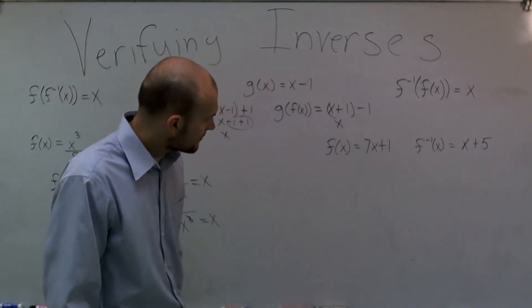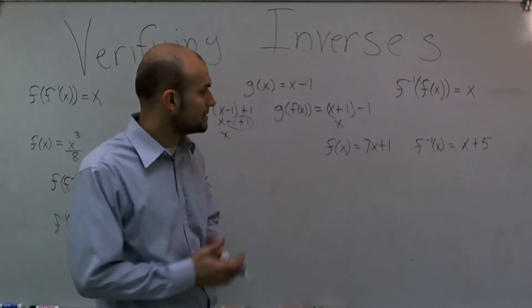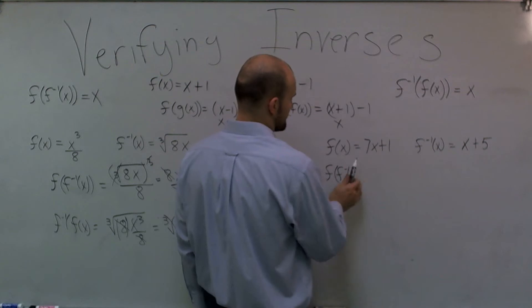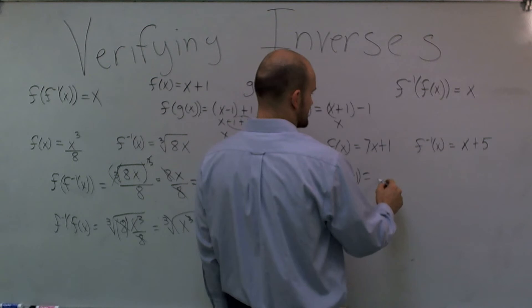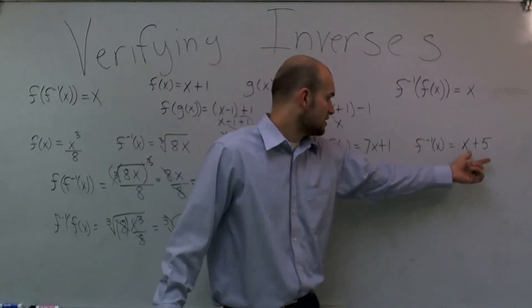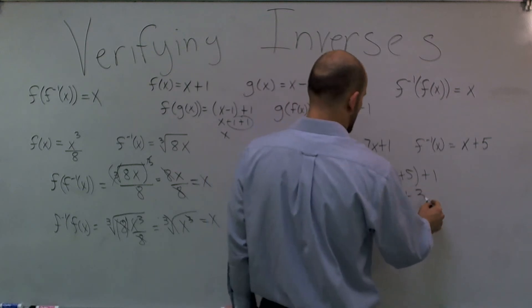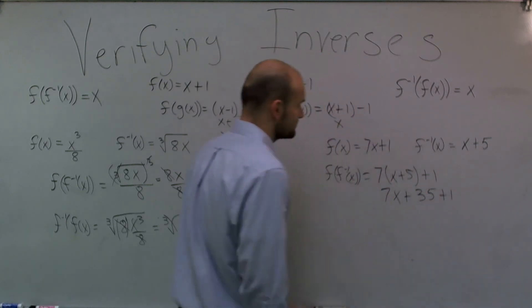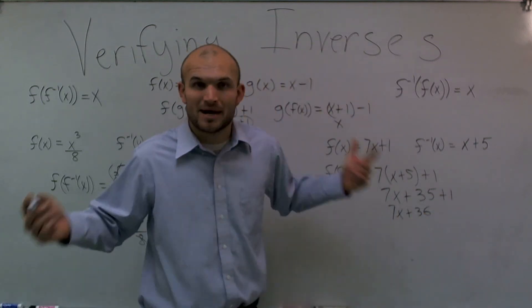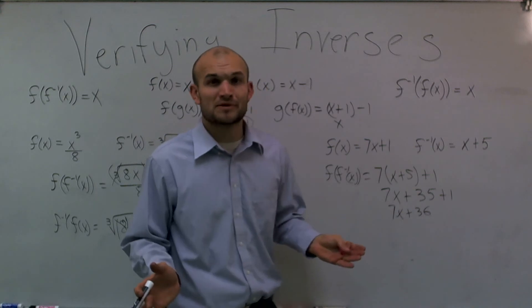Now let's look at f(x) = 7x + 1 and f⁻¹(x) = x + 5. I'll plug f⁻¹(x) into f(x): 7(x + 5) + 1. Using the distributive property, that's 7x + 35 + 1, which gives 7x + 36. That does not give me back my identity element, so these are not inverses of each other. We've already proved they're not, so we're done.